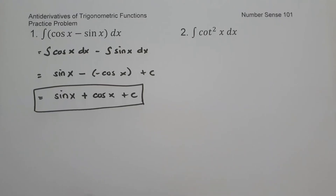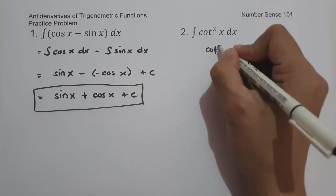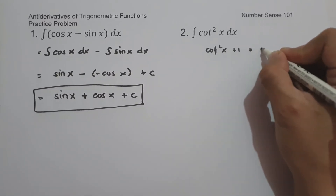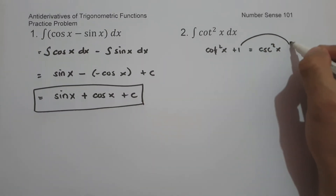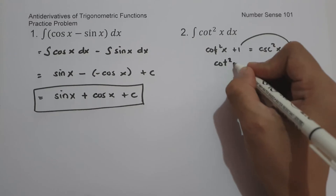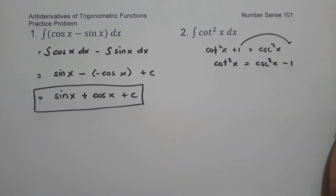On number two, what is the antiderivative of cotangent square x dx? To simplify this one, let us use Pythagorean identities. If we have cotangent square x plus 1, that is equal to cosecant square x. And if we move 1 to the other side, it will give us cotangent square x is equal to cosecant square x minus 1.